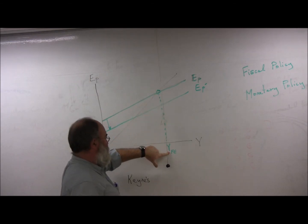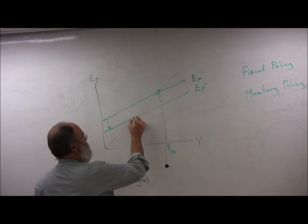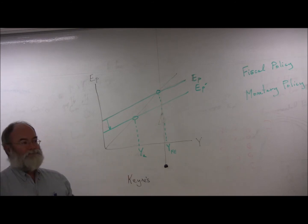If at the full employment level of GDP, spending is less than production, then GDP is going to fall into a recession. It's going to fall into a new lower level equilibrium that corresponds to higher unemployment. That's a recession.